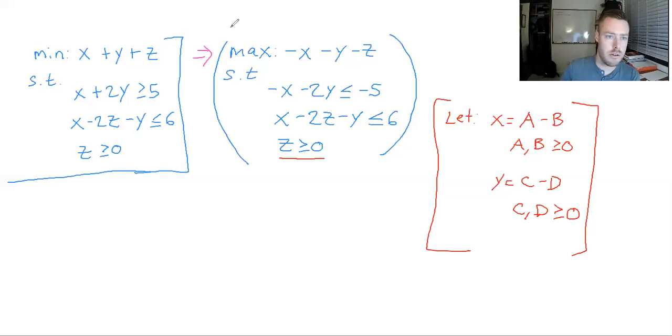All right, so kind of going forward with that, let's turn to a different color. Now our problem turns out to: we want to maximize... What is x? x is A minus B. Minus y—well, what's y? y is C minus D. Minus z. Cool. Such that minus x—well, x is A minus B—minus 2y. Well, y is C minus D.